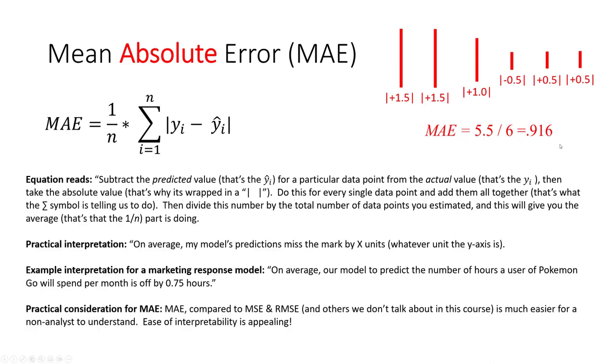That tells us in absolute terms how far off our model typically is from our predictions. Our goal here would be if we're using mean absolute error, we would want to try to minimize that number. We would want a low mean absolute error. Absolute error can never get below zero. At best, our model could be perfect and we have no error.